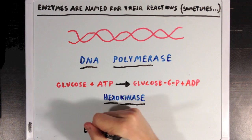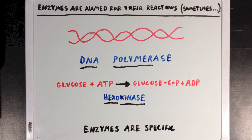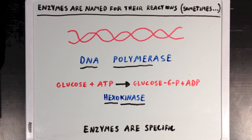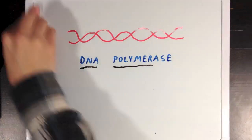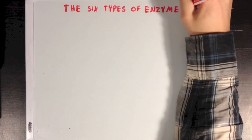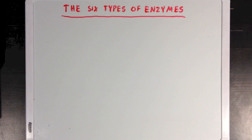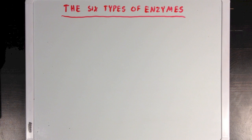Generally, every enzyme has a very specific name that gives insight into the specific reaction that enzyme can catalyze. We can actually divide most enzymes into 6 different categories based on the kinds of reactions that they catalyze.